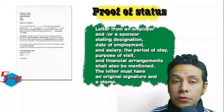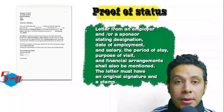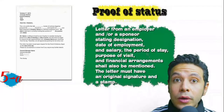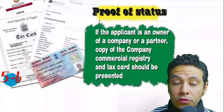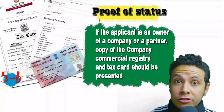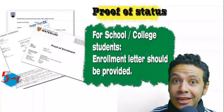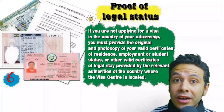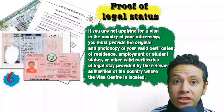In most visa application processes you will need to provide a proof of status. If you are an employee, you will need a letter from your employer or HR department mentioning your name, work details, salary, address, and contact numbers. All letters must have an original signature and stamp. If you own a company, your commercial registry and tax card must be presented. If you are a student, an enrollment letter from your university or school is required. If you are applying from a country different than your own, you will need to provide proof of legal residence in that country.